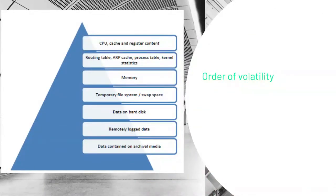Volatile data is data that is lost if the power is switched off. A computer requires some memory space where it could store most frequently used data, intermediary results of an operation, etc., which could be accessed by the CPU at a faster rate. Some examples of fast memory are CPU registers, cache memory, and random access memory.